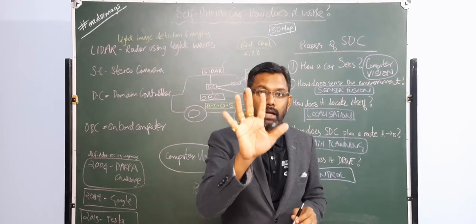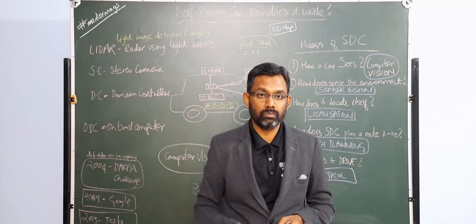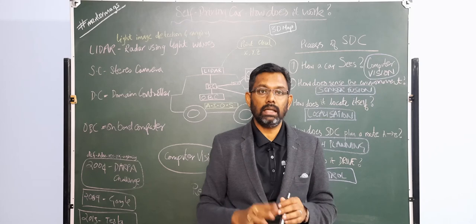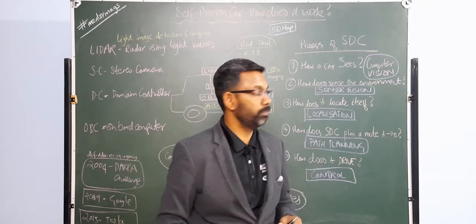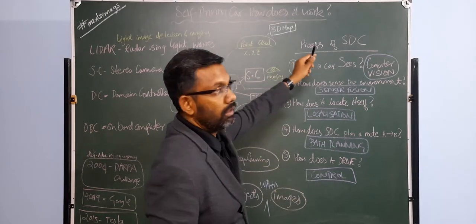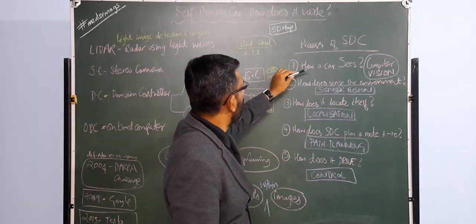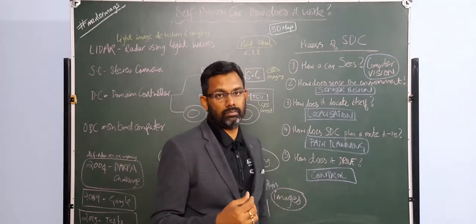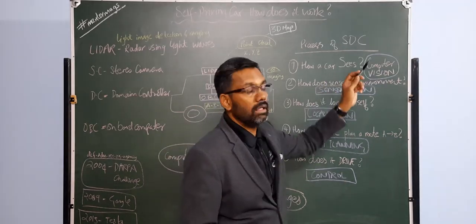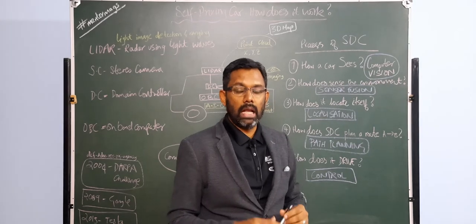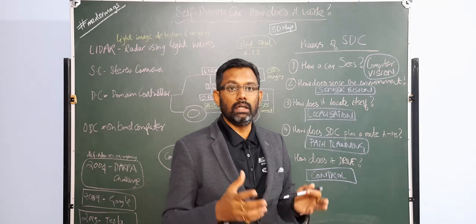Now that we have established the subsystems, what is the actual process? Well, there are five steps in the process of self-driving. In order to understand those five steps, let's ask five questions which are relevant. First question: how does a car see its environment? That is called as computer vision, and computer vision is achieved by using a stereo camera.